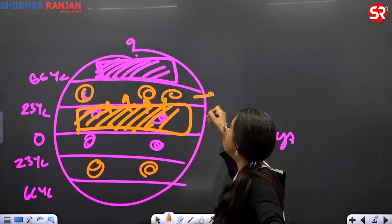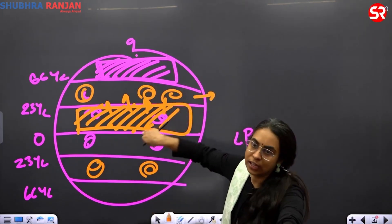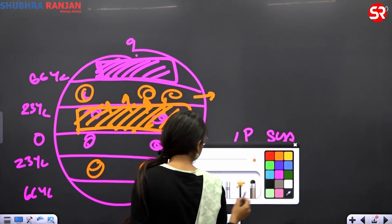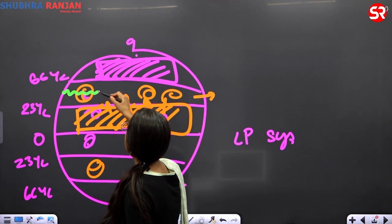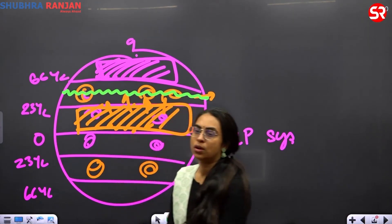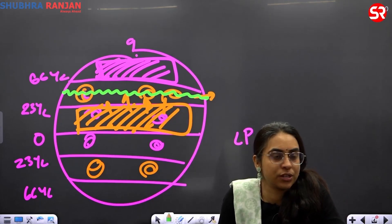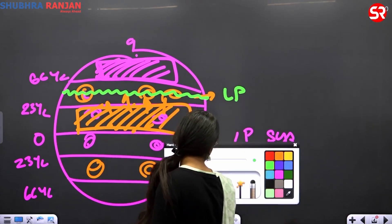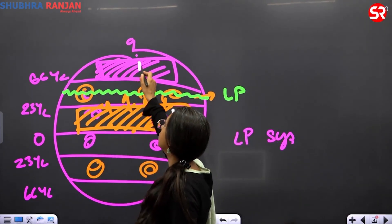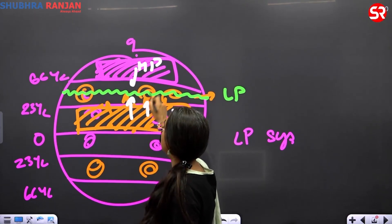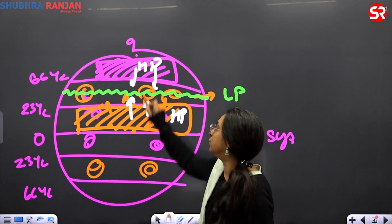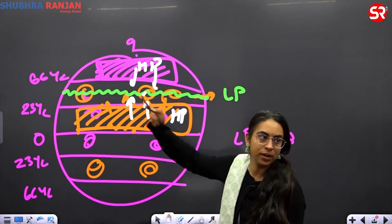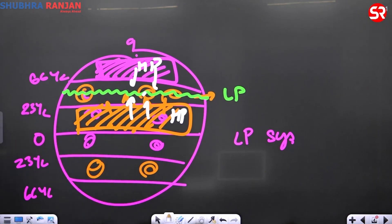The weather in the temperate belt is affected by cold air masses or warm air masses. At around 60 degrees latitude, we have low pressure. At 30 degrees, high pressure, and at 90 degrees also high pressure. So air masses obviously move towards the low pressure at 60 degrees. If cold polar air dominates, cold conditions. If warm tropical air dominates, warm conditions. So the weather of the temperate belt is affected by cold polar air masses or warm tropical air masses.